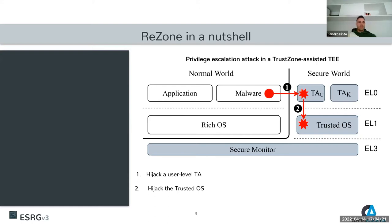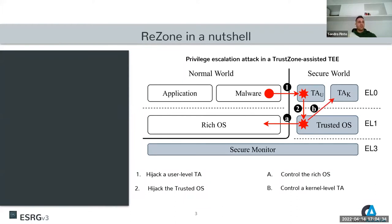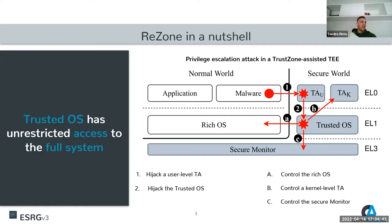Once you have full control of the trusted operating system in the secure world, you can basically access and tamper with the main operating system such as Android, tamper with other trusted applications, or even worse, fully compromise the secure monitor, which is the firmware running at the EL3 level of privilege. You can basically have full control of the system — this is really bad.